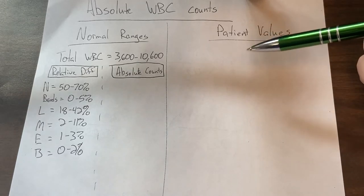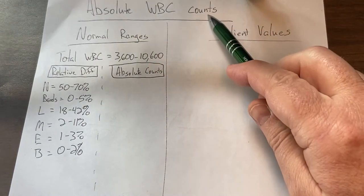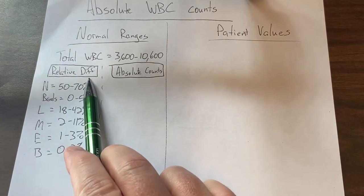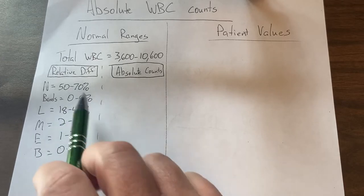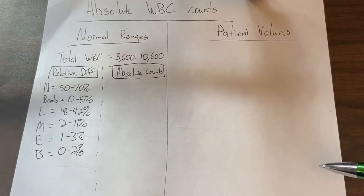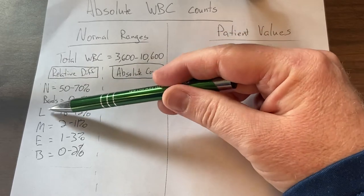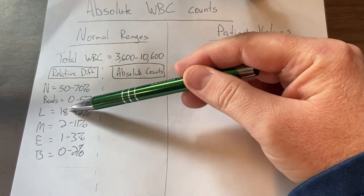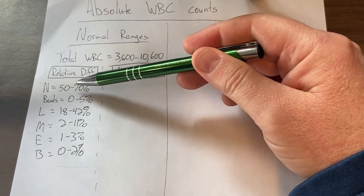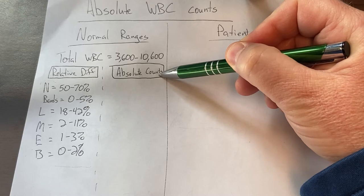In this video we're going to learn how to accomplish the calculation for absolute white blood cell counts. The values we have learned so far have been for relative counts, which are percentages. These are the exact numbers we talked about in class: neutrophils 50 to 70 percent, bands 0 to 5 percent, lymphocytes for an adult 18 to 42 percent. Those are relative counts, meaning they are percentages.